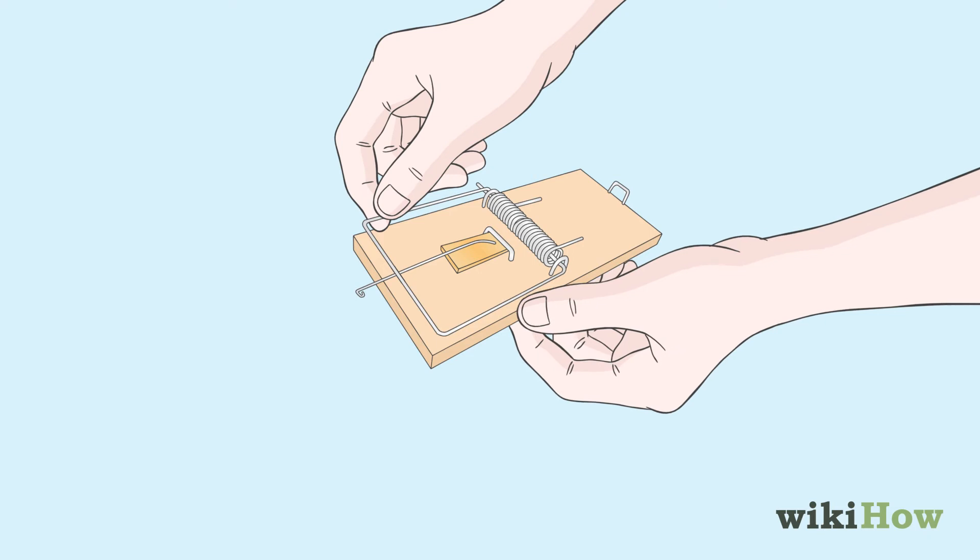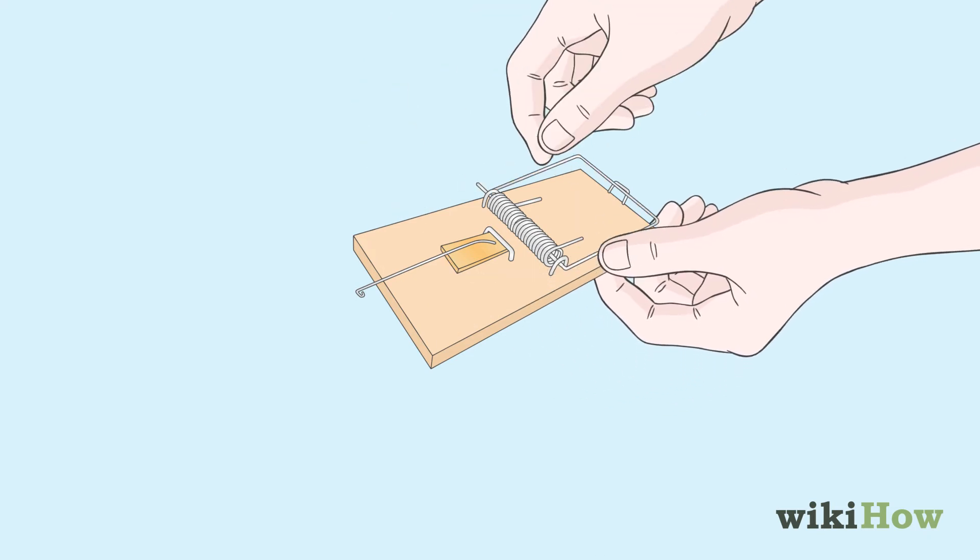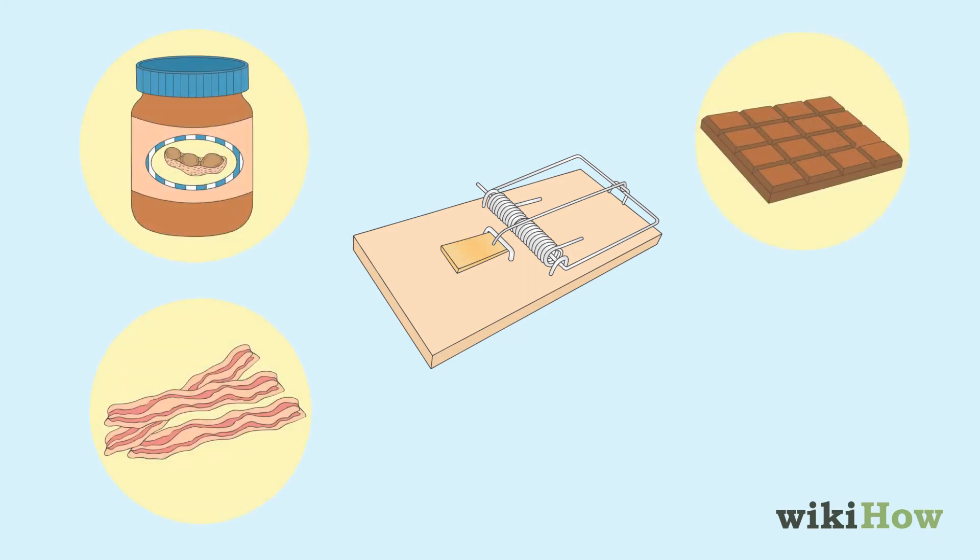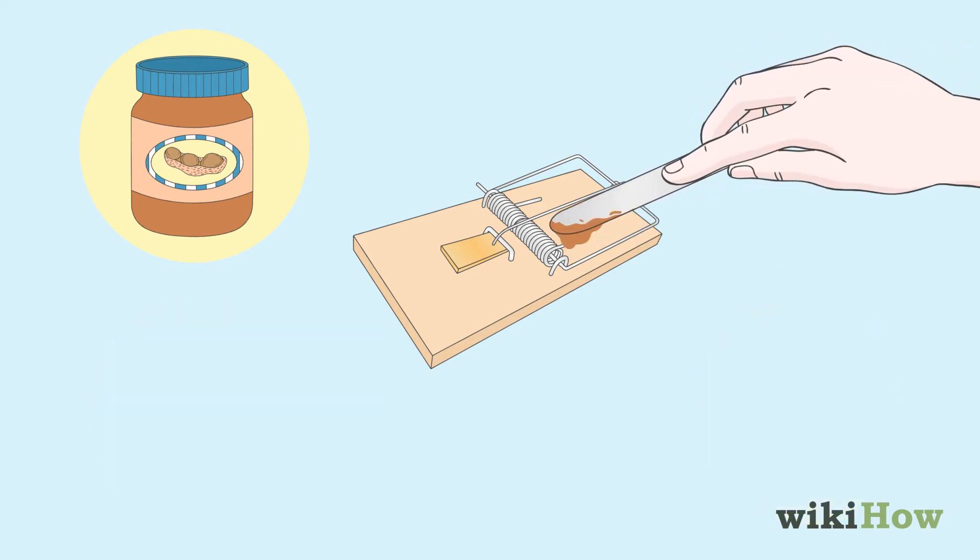Bait the traps with food that are high in fat, sugar, and protein. While cheese can work as bait, better choices are peanut butter, bacon, chocolate, or pet food. Because of its sticky consistency, peanut butter is often a very effective option.